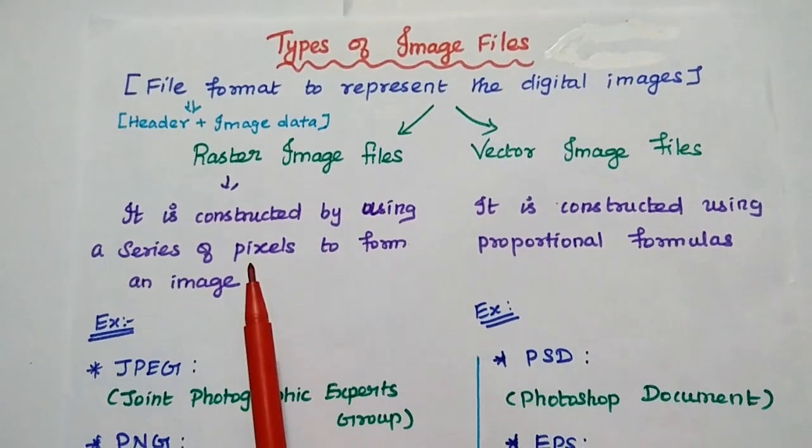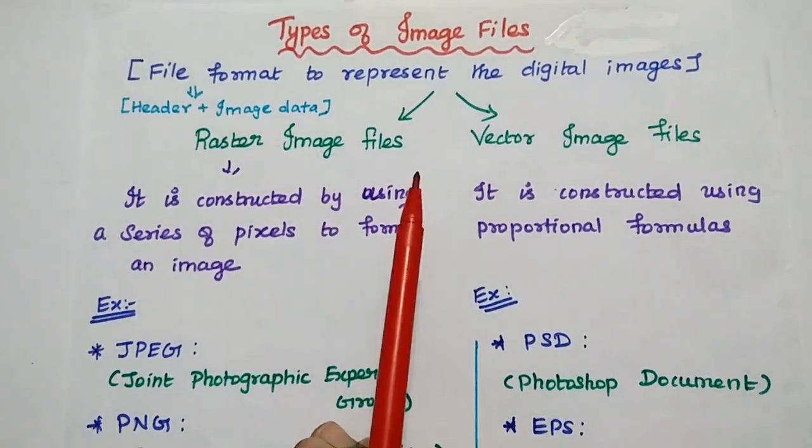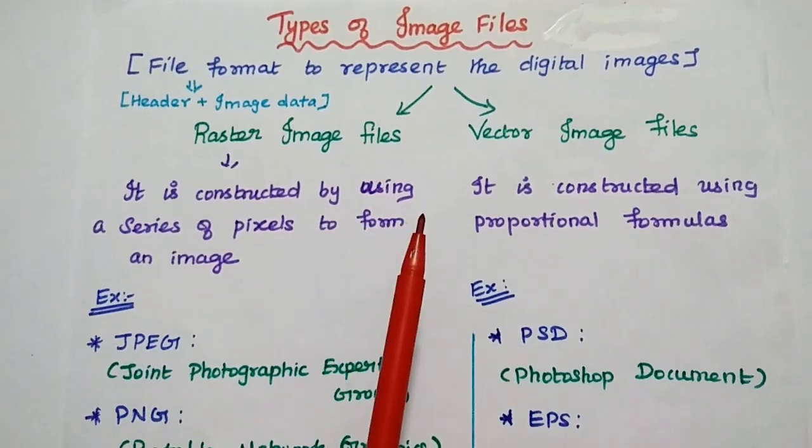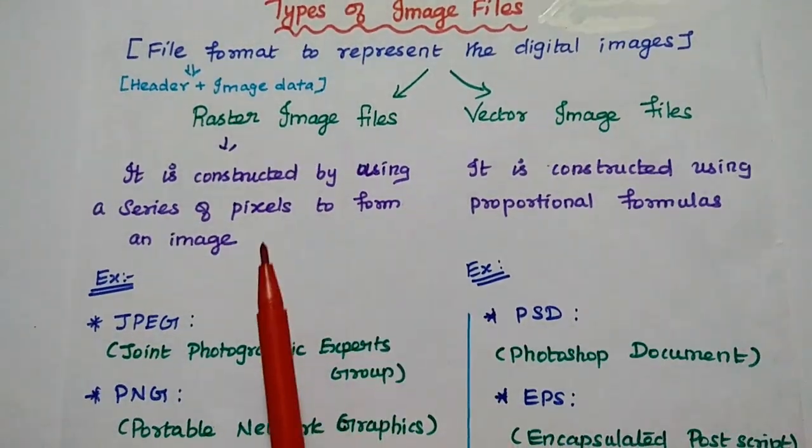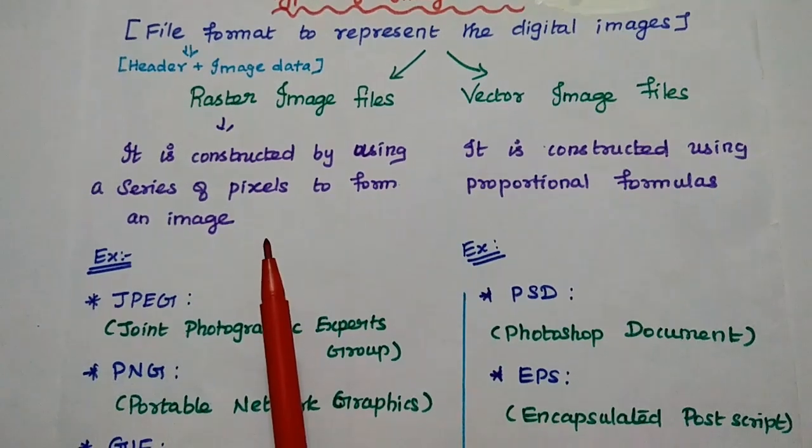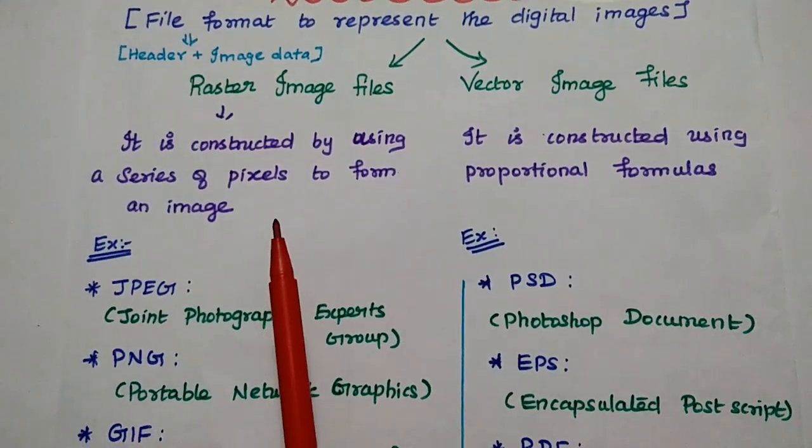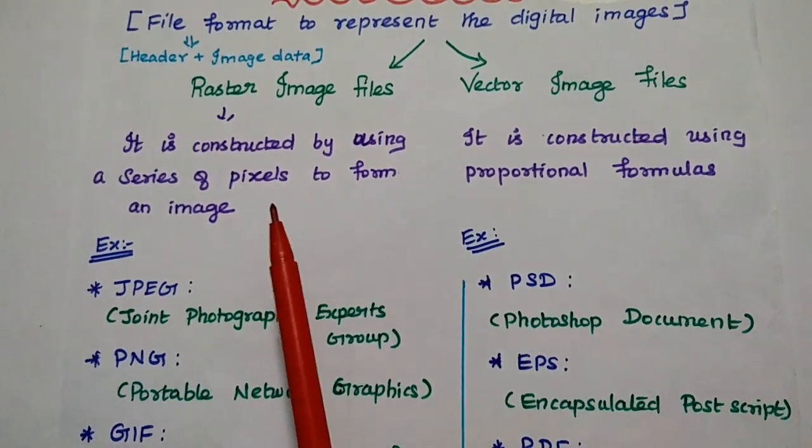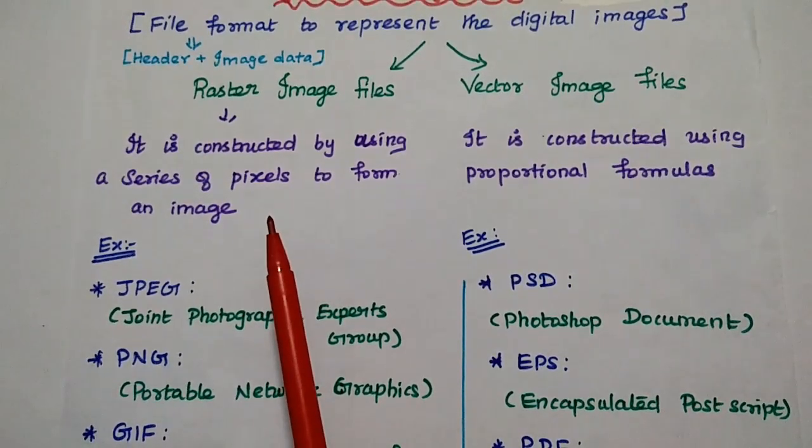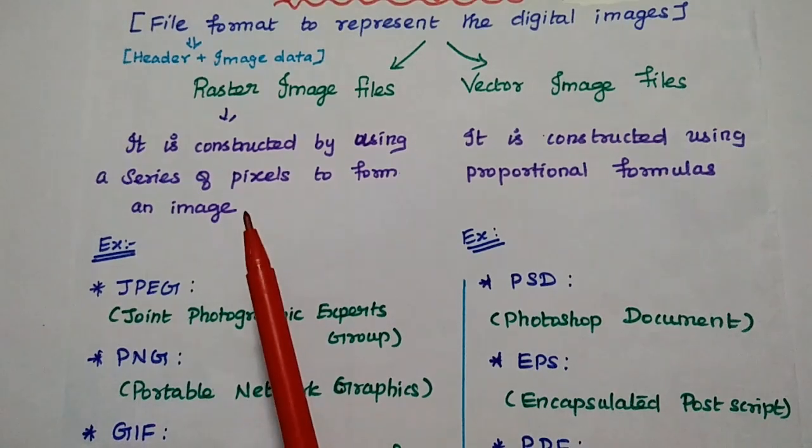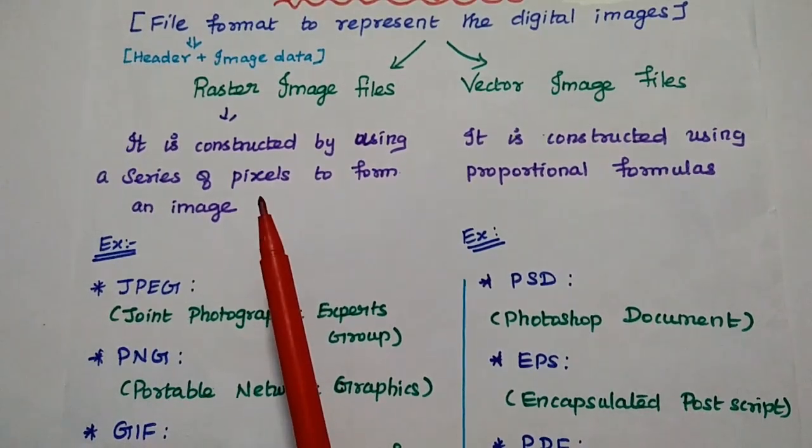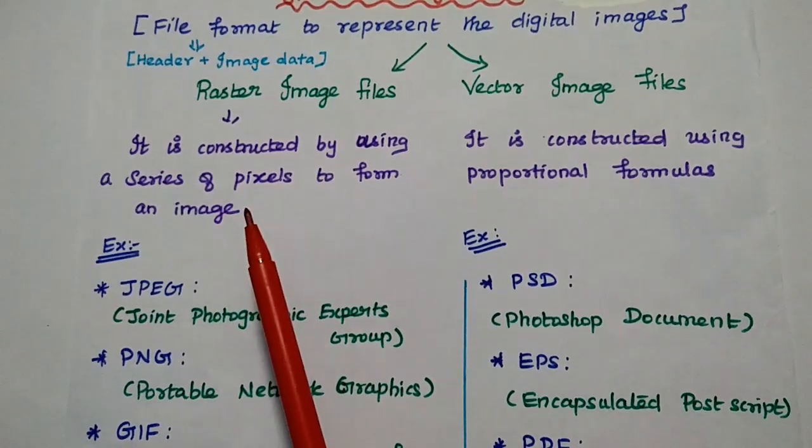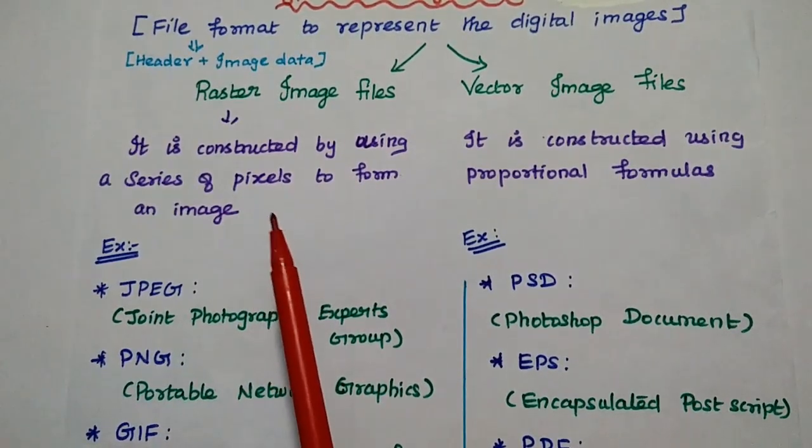This file format can be broadly classified into two types. One is raster image files, the next one is vector image files. In raster image files, the image can be constructed by using a series of pixels. Here we are talking about the picture elements. Whatever images we are taking using a phone, everything is coming under this raster image files. It is constructed by using a series of pixels.